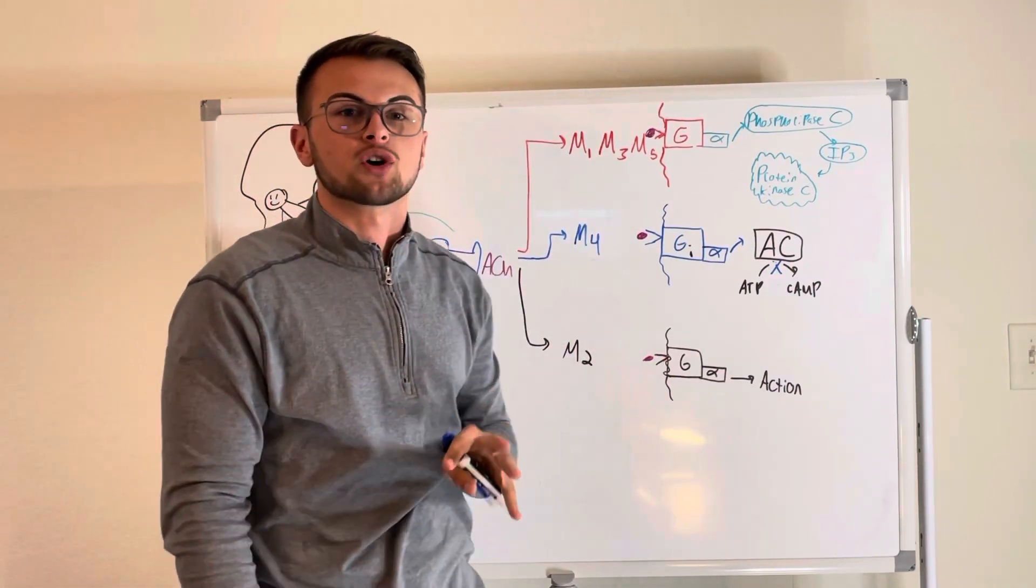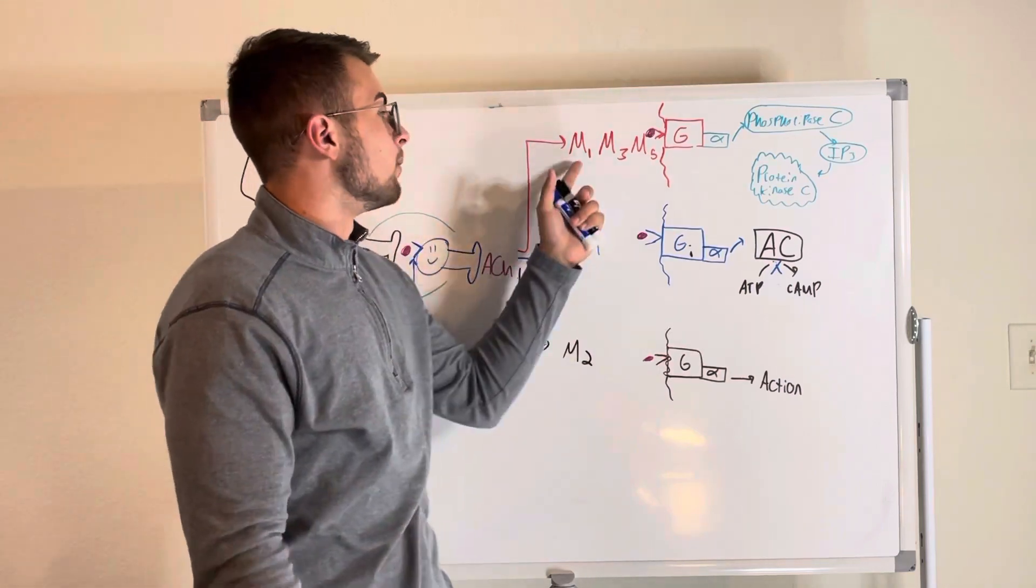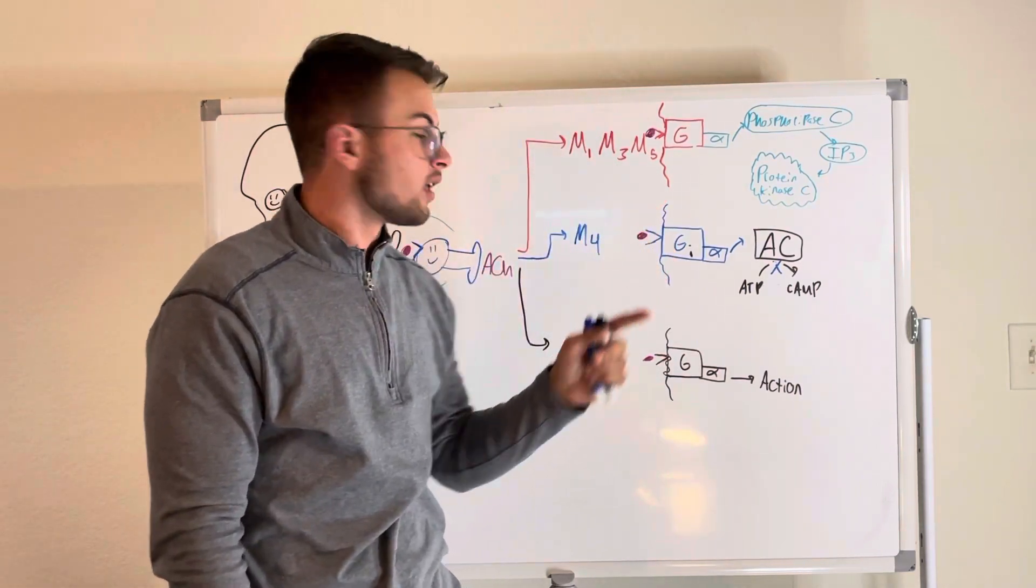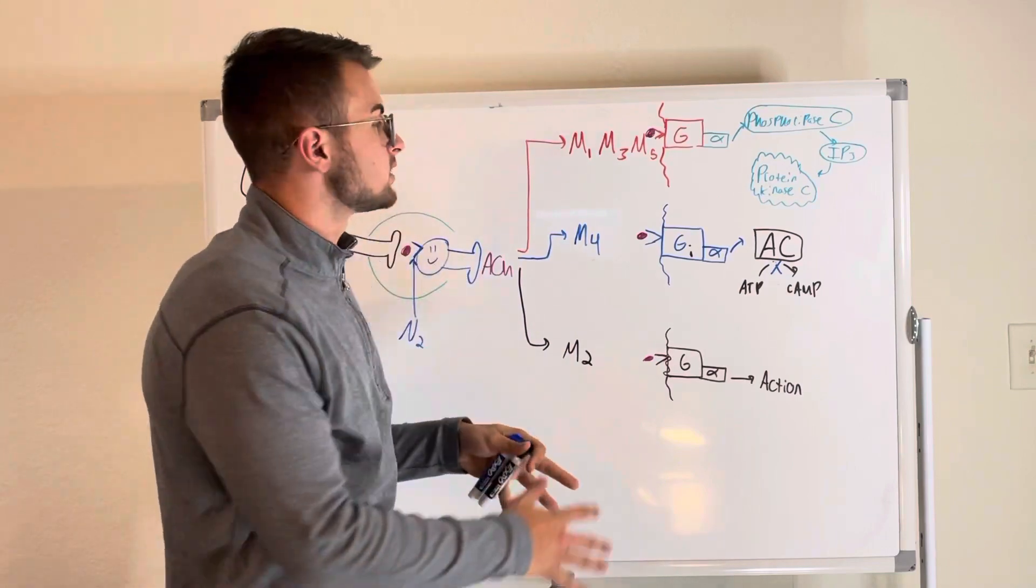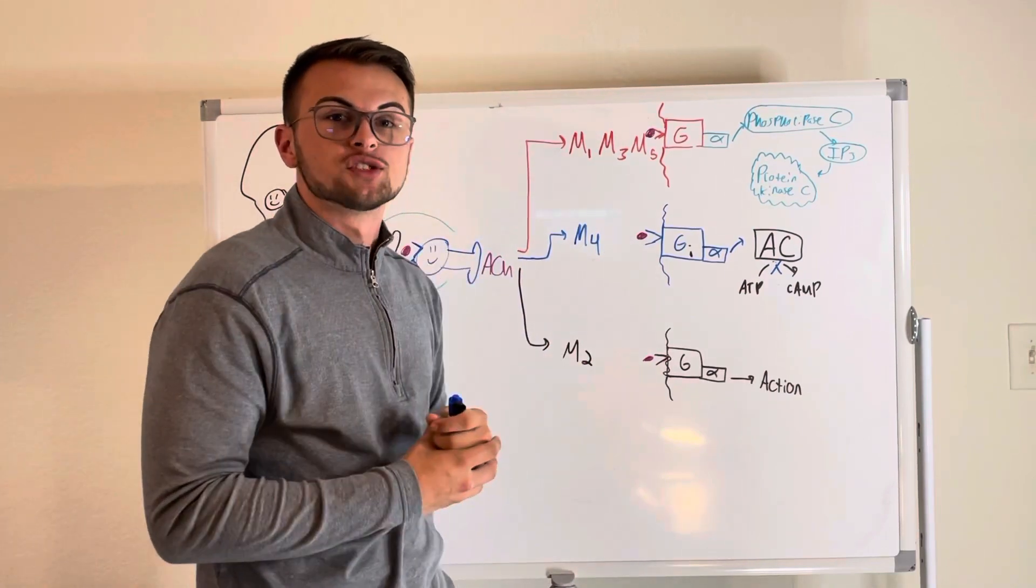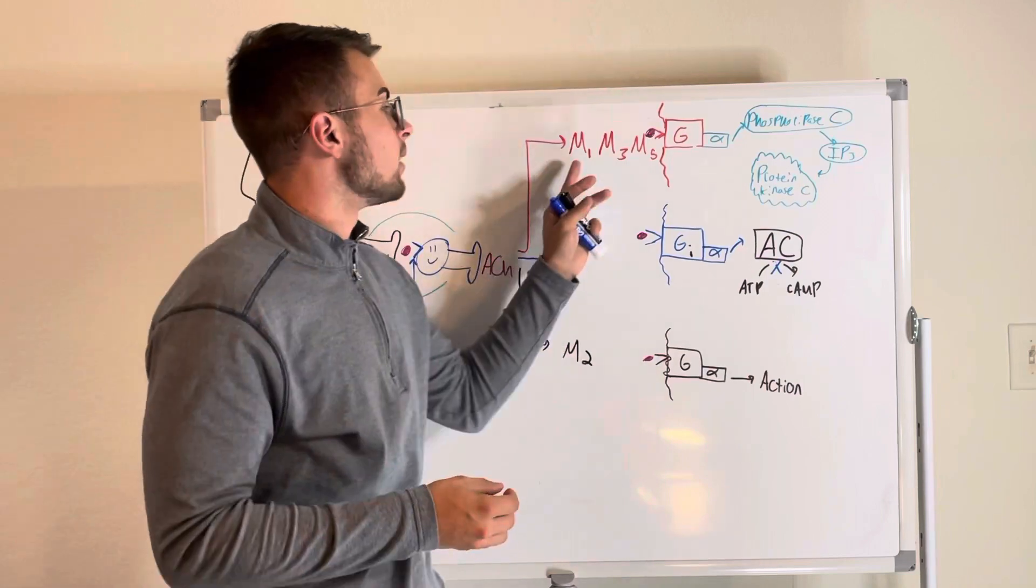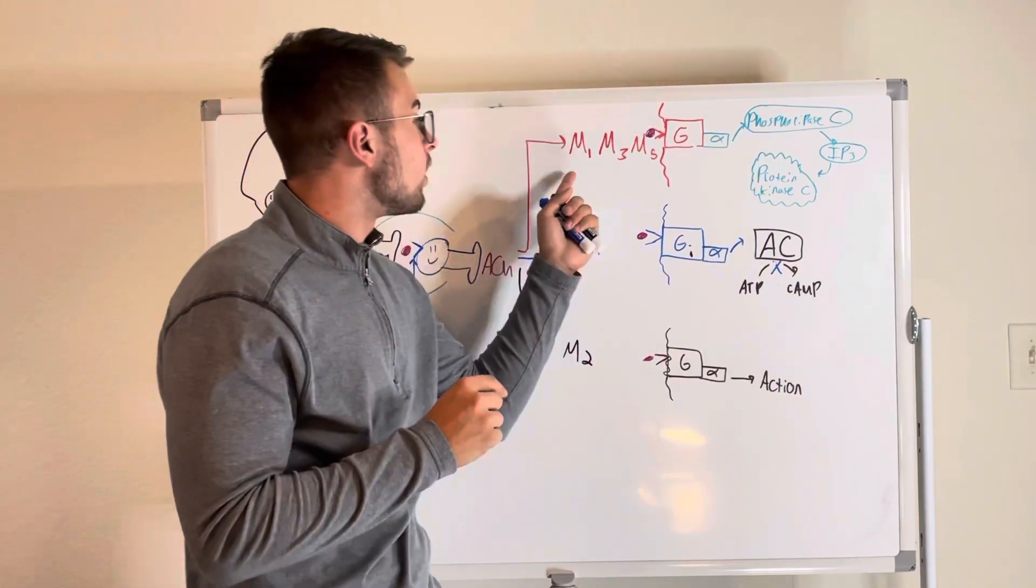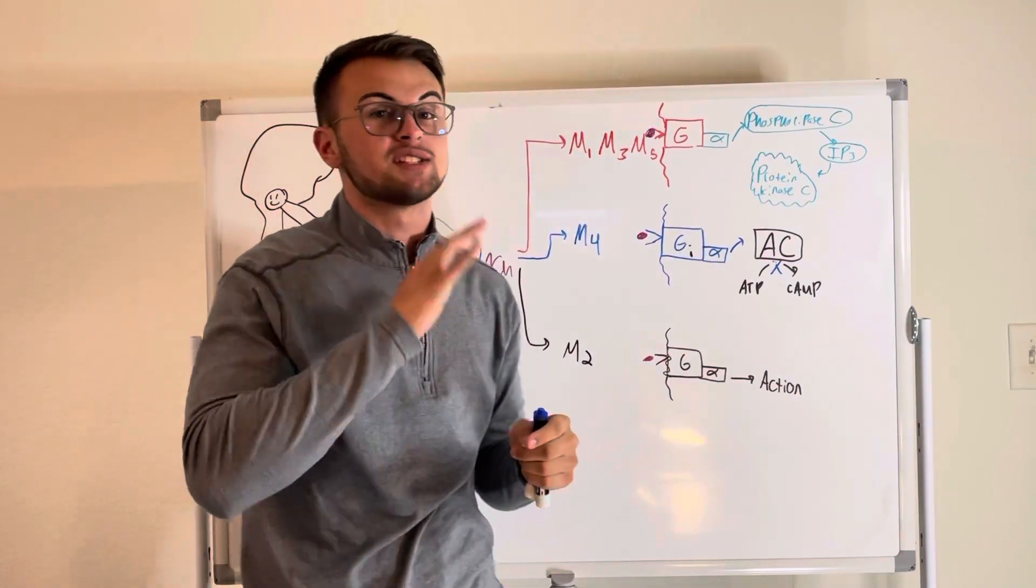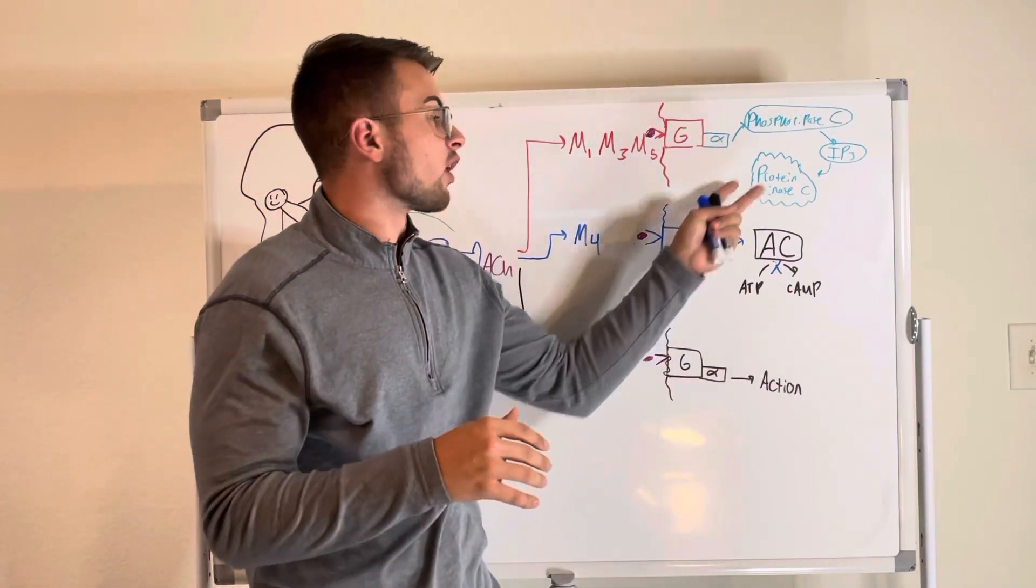Now the muscarinic receptors are grouped together as M135, M2, and M4. So I grouped them together based on their mechanism of action. So if we need to remember anything, it's M135 calcium drive. This is because M135 receptors have the same mechanism of action as our alpha-1 receptors.